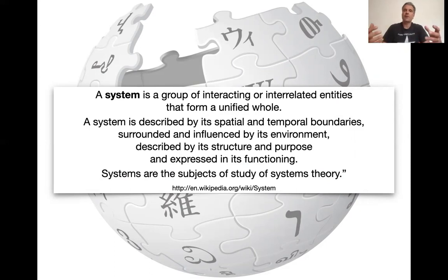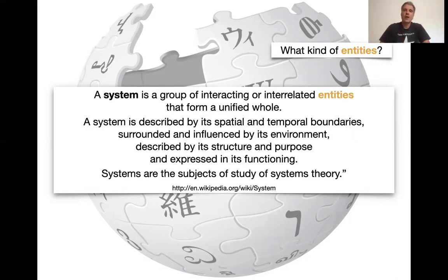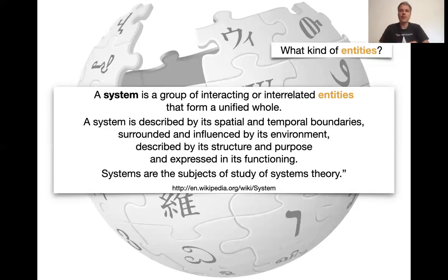We're going to apply some sort of philosophical systems theory here to biology in this lecture. What are the entities that are interacting or interrelated here? There are several questions involved. The entities that are interacting could be objects. They could be events. They could be agents. They could be processes. It's not clear what they are, so we need to think a little bit more about that.